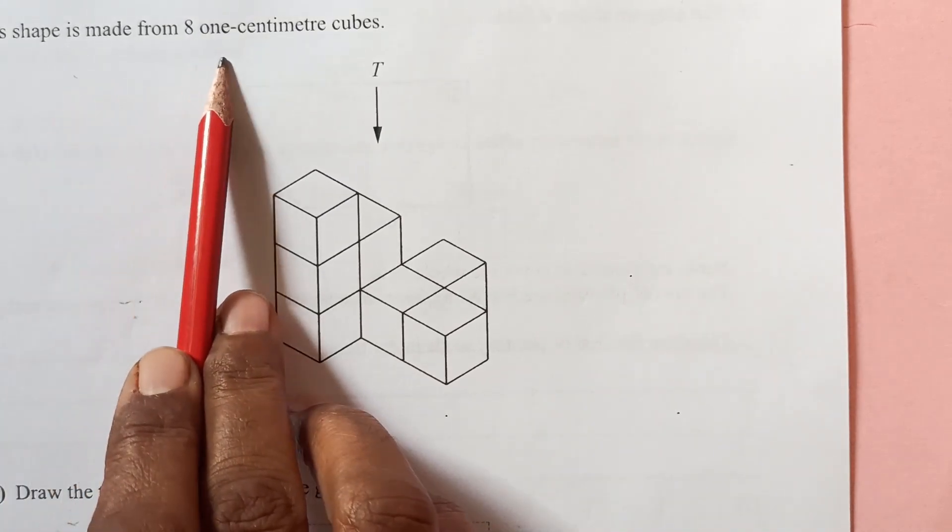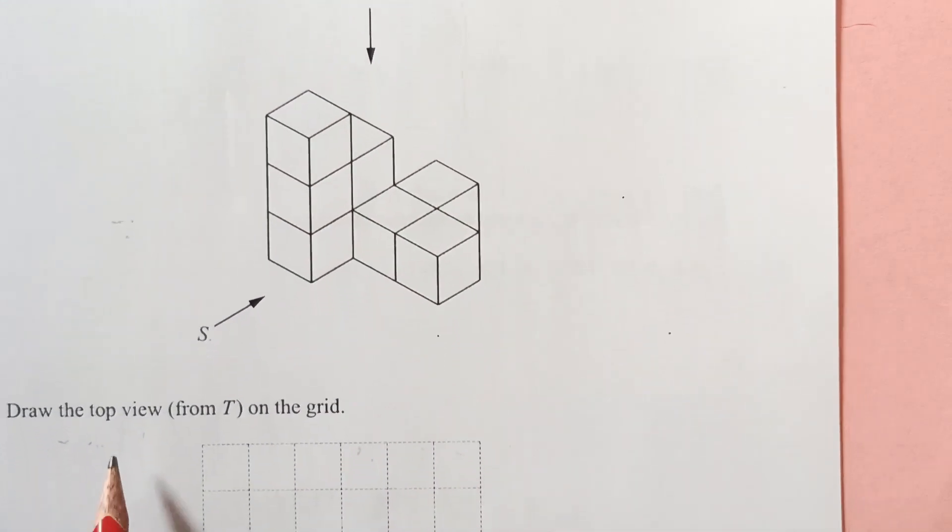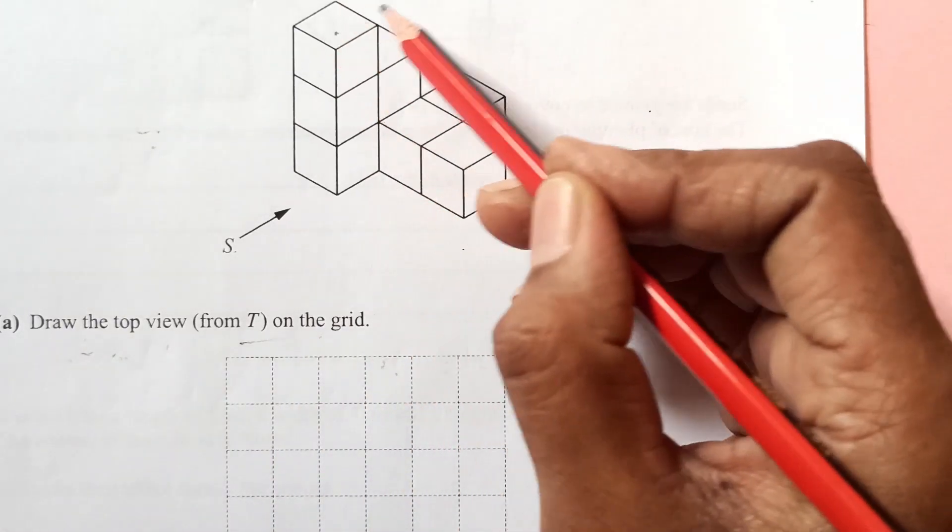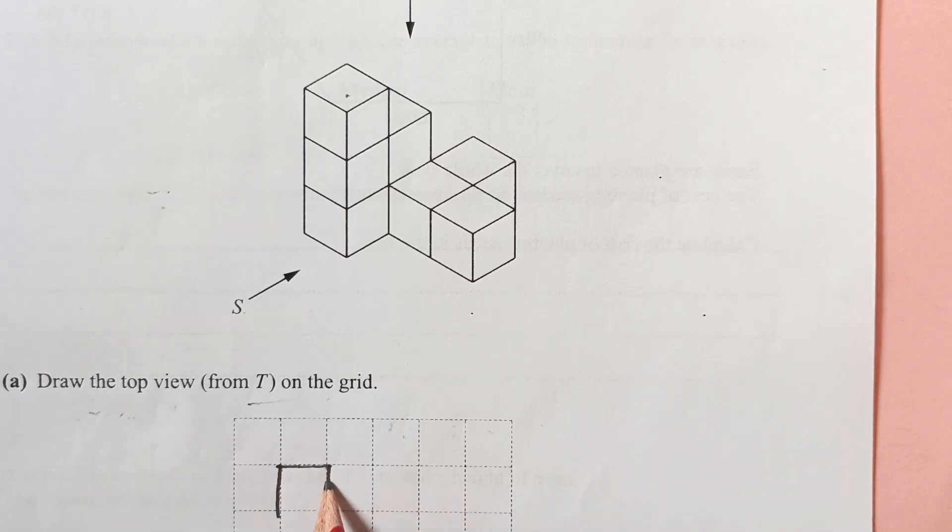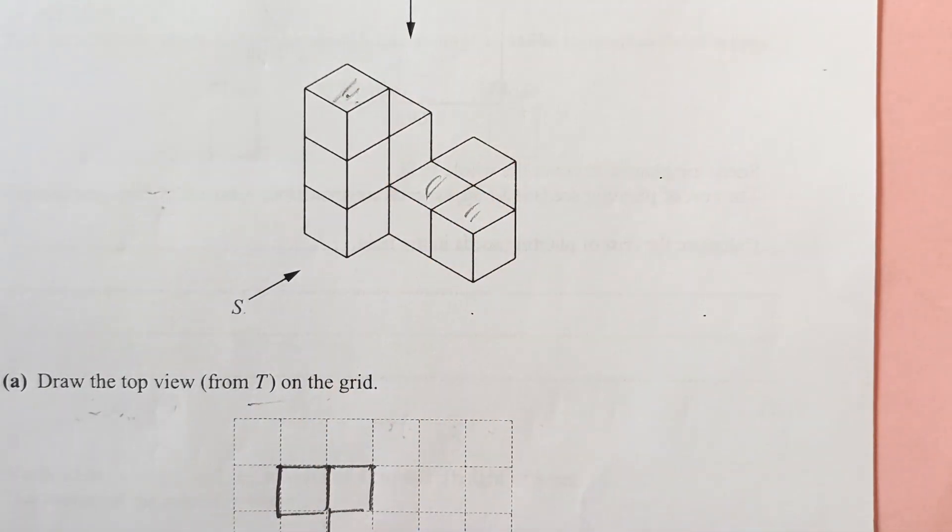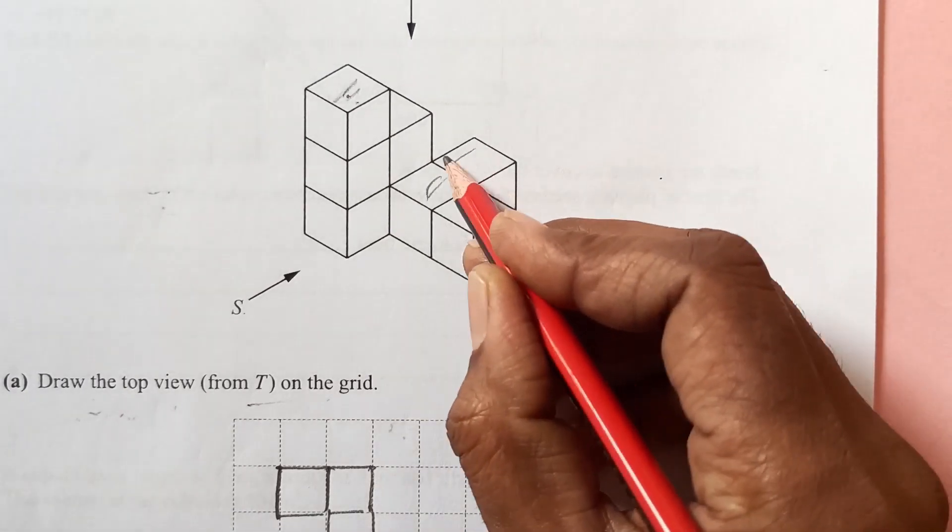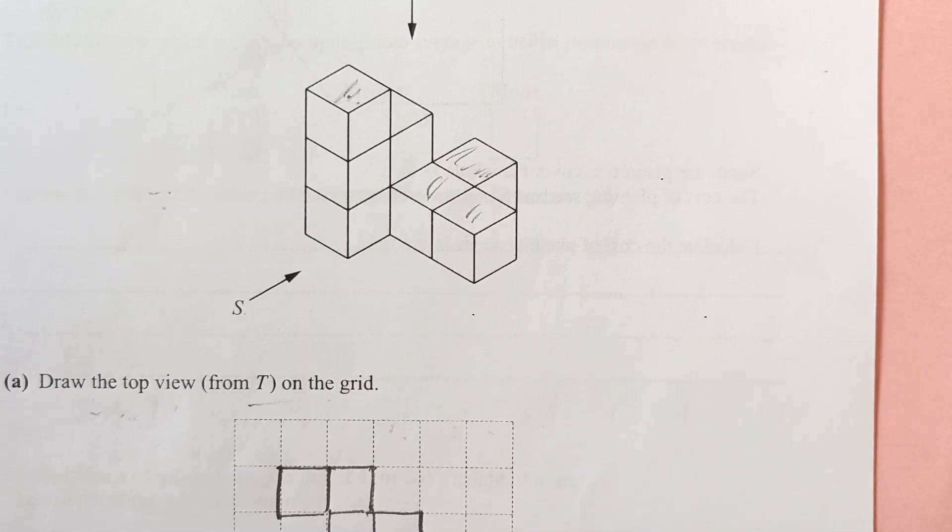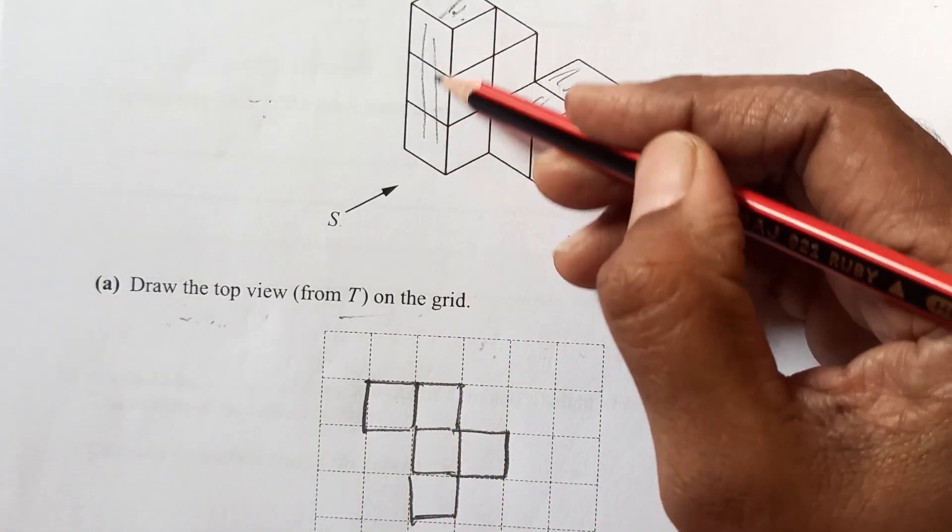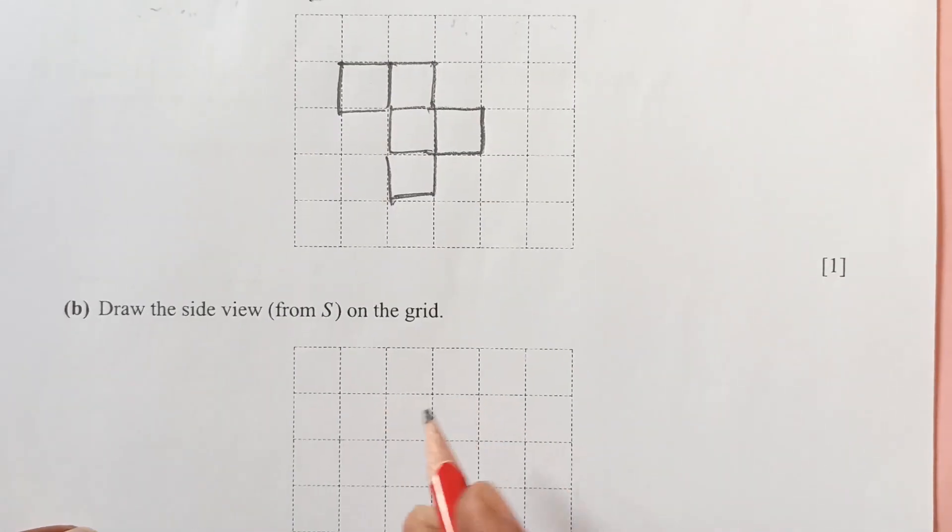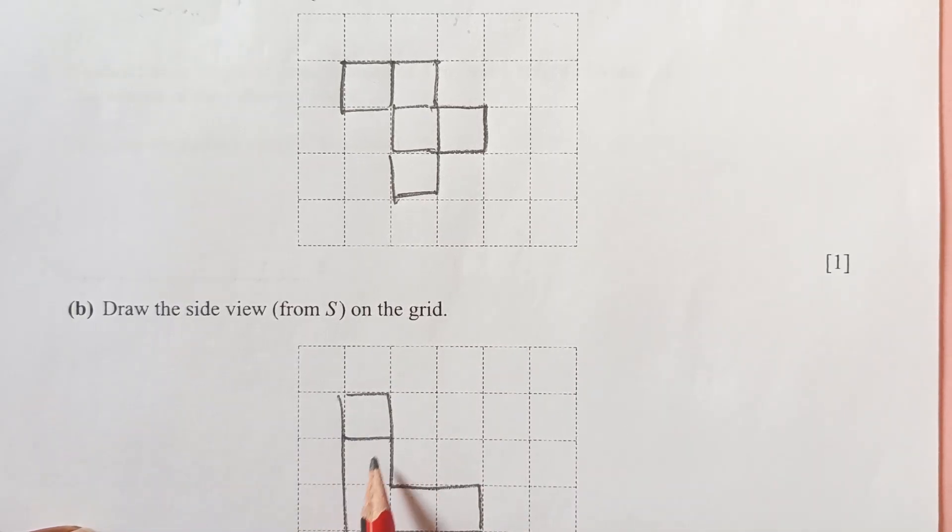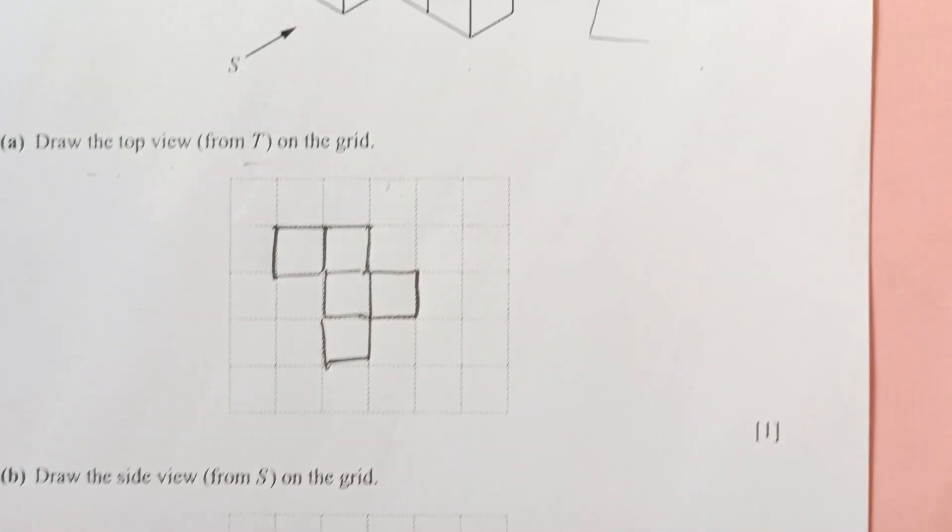Number 20. This shape is made of 8 one centimeter cubes. Draw the top view from T of the grid. Top view. You see, there is one square here and one beside on this other side. So we will write here 1 cube here. Another one is going to be here. Then this side, we will look for this one, this and this. That means it will come over here. And there is one on this side. So this will be here. Now, draw the side view of S of the grid. Side view, you will have 3 of this and 2 of this. So that is going to be like an L shape. 3 here, this side and 2 this side. That's how you are going to draw this.